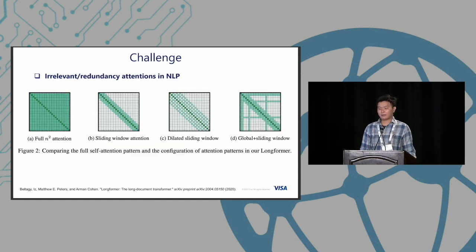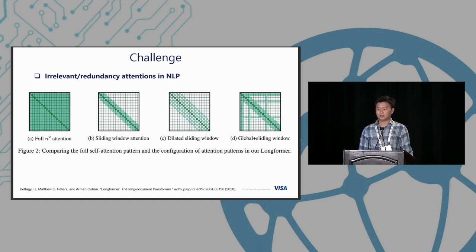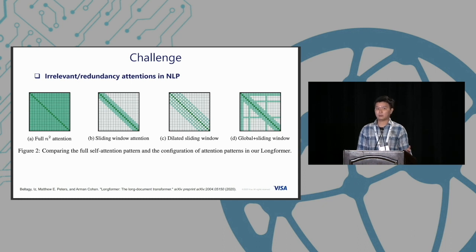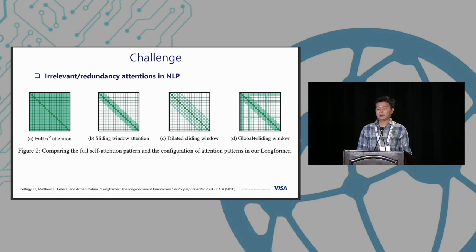Denoising attention is not a new story. People have found this kind of redundancy in attention in natural language processing — for example, in the sparse transformer or the Longformer. They find that even in NLP, sparse attention maps actually help improve the robustness and efficiency of transformer models. Many of our ideas follow from the NLP domain and how to apply sparse attentions in our design.